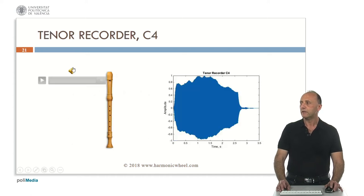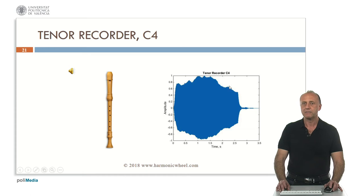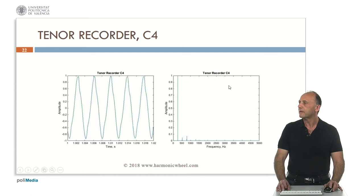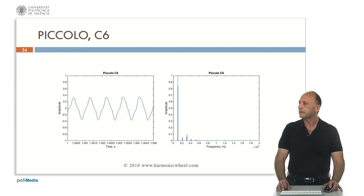Now a tenor recorder, C4, which is a woodwind instrument. The amplitude is practically very uniform. This is the waveform and the spectrum. The piccolo, C6, with a vibrato. This is the waveform and the spectrum.